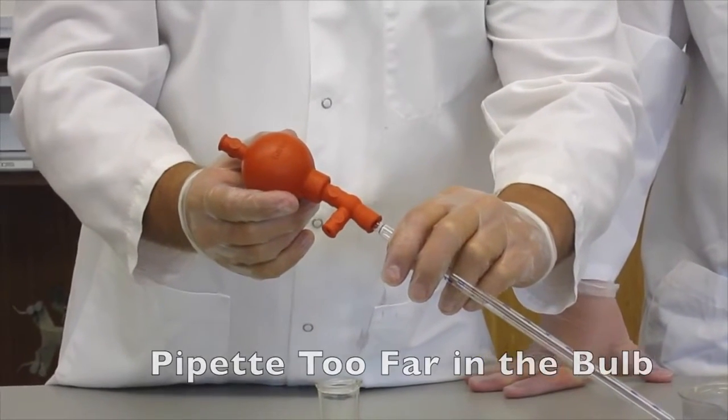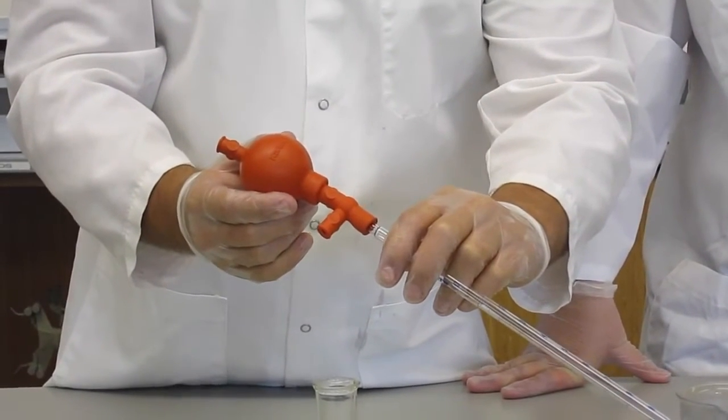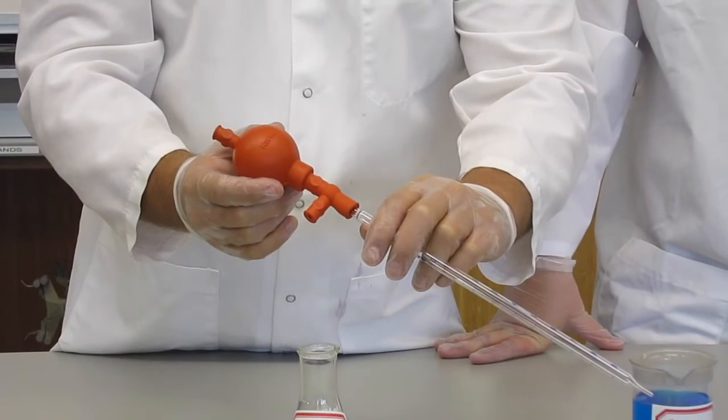When a pipette is pushed too far into the bulb, it blocks the eject valve, not allowing you to dispense your liquid. To fix this, pull your pipette out a little bit, removing the obstruction.